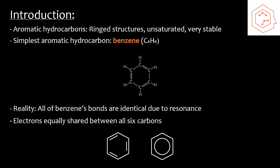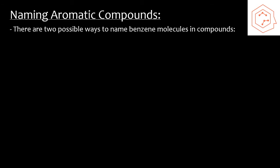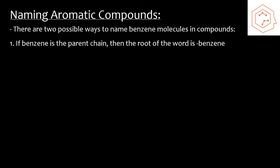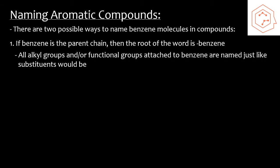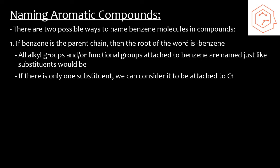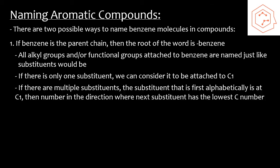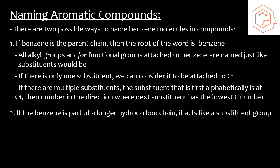When we want to name compounds that have benzene rings in them, there are two different ways this can be done. If the benzene ring is the parent chain — where there could be some other functional groups or small alkyl groups attached to the ring — then we're going to use the word benzene as the root of the name. Any other groups attached to the benzene are named just like substituent groups before. In terms of numbering, if there's only one substituent group attached to benzene, it's bonded to carbon one. If there's more than one substituent group, we assign carbon one to the substituent that comes first alphabetically, then number in the direction closer to the next substituent group.